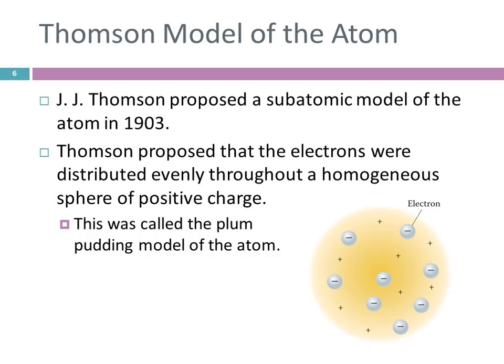In 1903, J.J. Thomson proposed a subatomic model of the atom. They knew about the negative particles — the electrons — so Thomson asked what that would look like. He proposed that the electrons were distributed evenly throughout a homogeneous sphere of positive charge. This was called the plum pudding model. He was British.